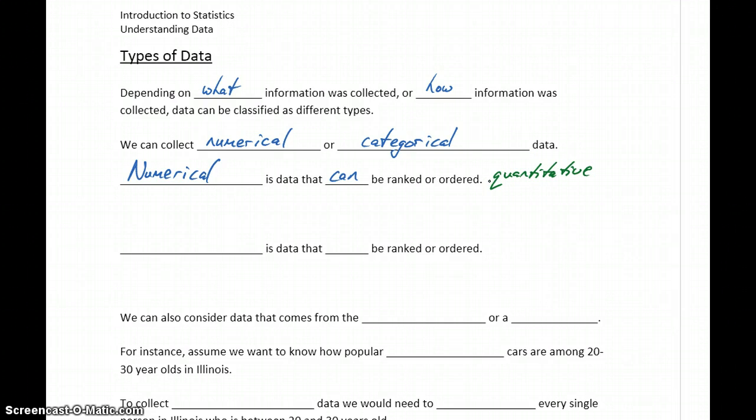The word quantitative has that root of quantity in it. So numerical data, quantitative data, means exactly the same thing. It's any data that can be ranked or ordered. For example, weight, salary, years of education. Those would be data values that can be ranked or ordered. There are certain weights that are more than others, salaries that are less than others, years of education that are more or less than others. Whatever those resulting numbers are, they could be ranked and ordered in comparison with each other.